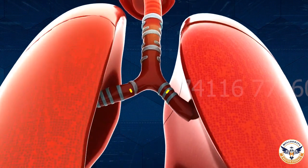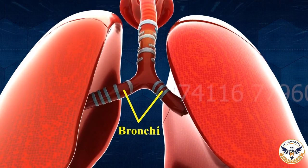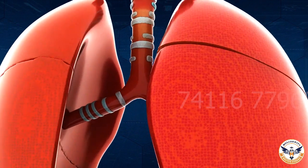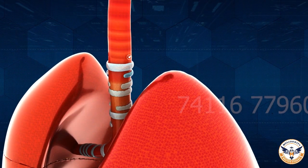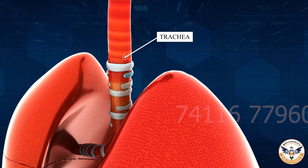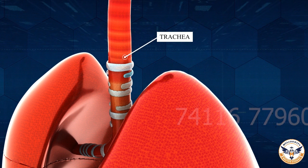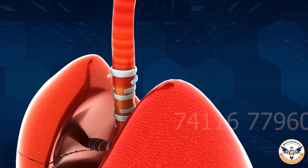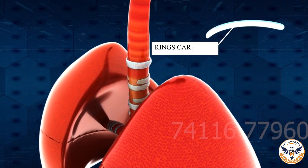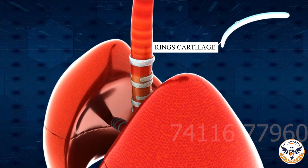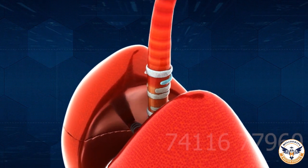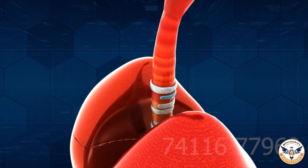The lungs are connected externally with small tubular bronchi which join and extend into the trachea. The trachea, also known as the throat and windpipe, has incomplete C-shaped rings of cartilage present in the throat. These ensure that the air passage does not collapse.